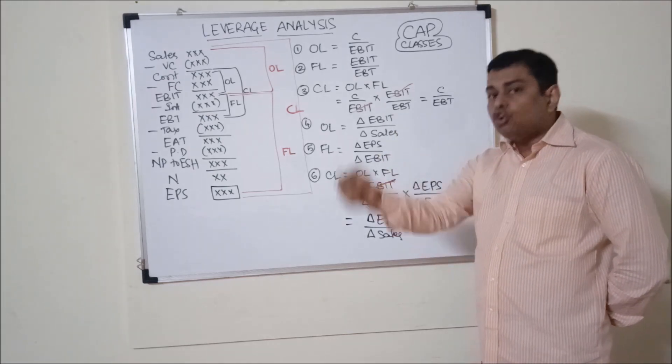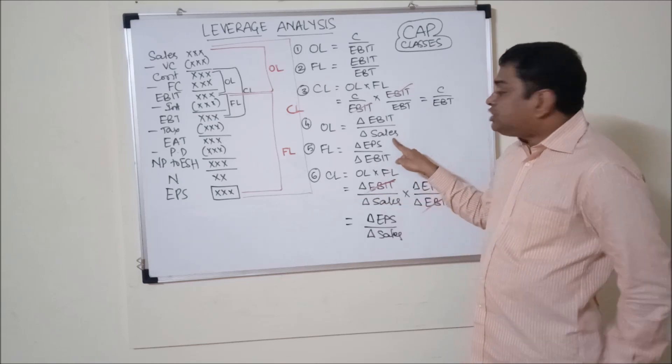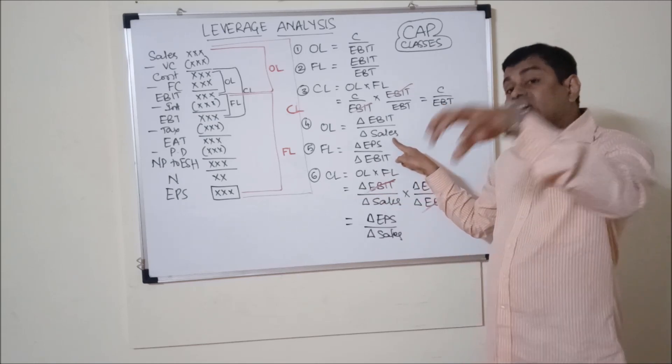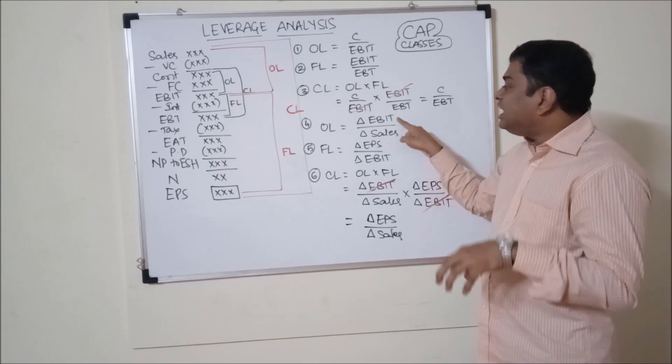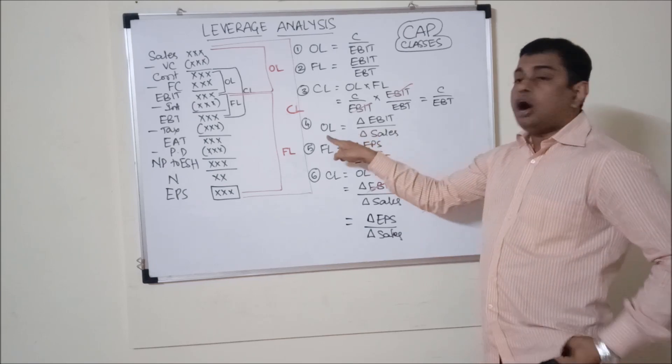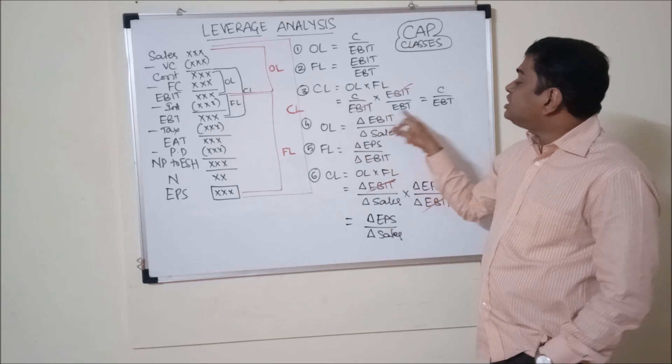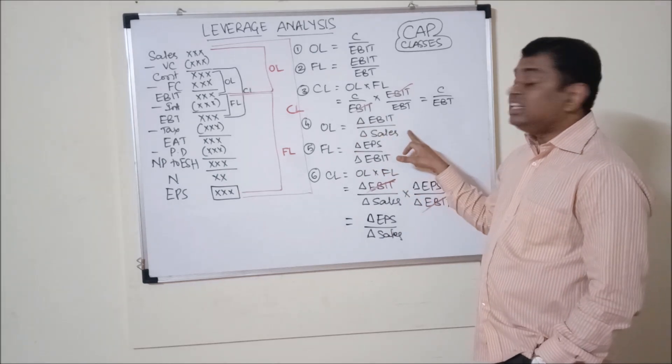That means as I told you earlier, if sales changes by 1, with what magnitude, with what amount EBIT changes. This is operating leverage. We can say changes in operating profit divided by changes in sales.